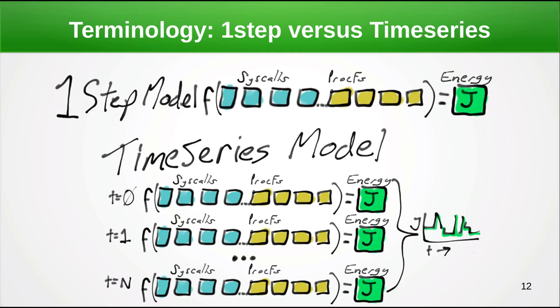We'll have two different kinds of models and two different kinds of model evaluation. The first is the one-step model: it takes in features such as syscall counts and PROCFS features all at once and produces one energy estimate. The time series model is similar, except we repeat it numerous times for time windows — given a 50th of a second, we count the syscalls and PROCFS values in that window, send them to our model, produce an instantaneous power estimate, and produce a plot of power over time. If we still want total energy use, we simply integrate our time series.